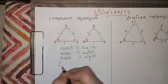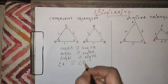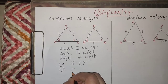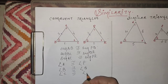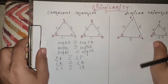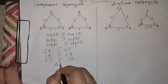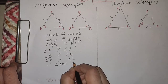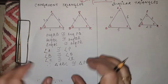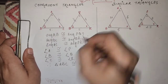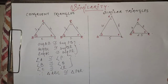In congruent triangles, even the angles are the same. Angle A is congruent to angle P, angle B is congruent to angle Q, and angle C is congruent to angle R. Therefore, triangle ABC is congruent to triangle PQR. This means when triangles are congruent, their sides are also congruent and the corresponding angles are also congruent.